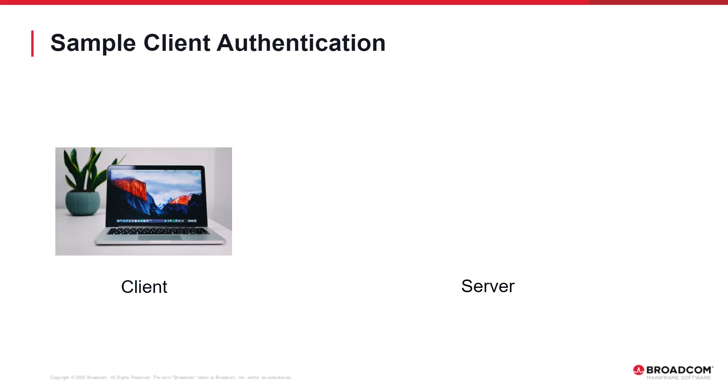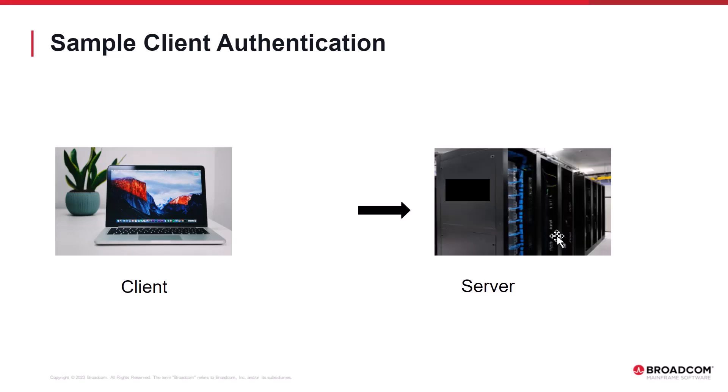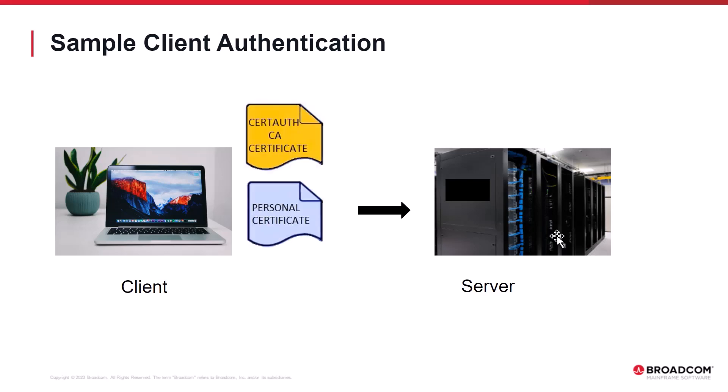Similarly, let's look at how a digital certificate is used to authenticate a client trying to connect to a server. On the left, we have the client with its personal certificate and the CA cert auth certificate that authenticated it. On the right is the server, which holds a copy of the same CA cert auth certificate that authenticated the client's personal certificate. The client will connect to the server, and after server authentication is done, the client will pass its personal certificate to the server for authentication. The personal certificate was signed by a CA cert auth certificate, similar to how ABC Bank authenticated the credit card. For the server to authenticate the client's personal certificate, the server needs the CA cert auth certificate that signed it. Once the personal certificate is authenticated, a secure connection is established.